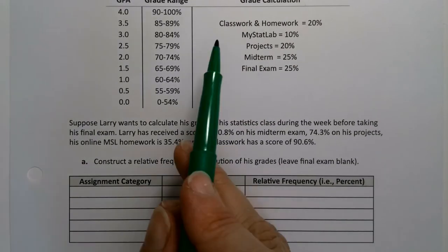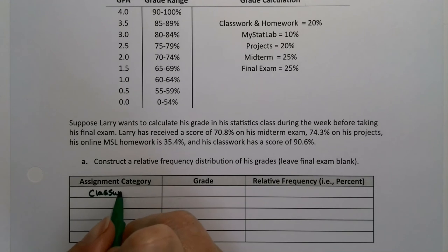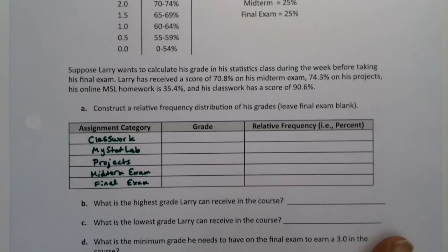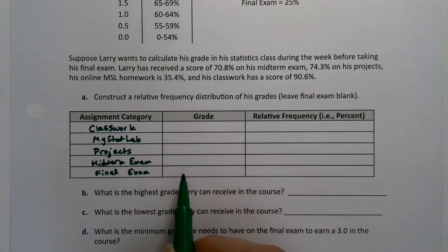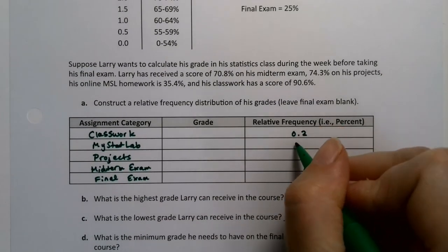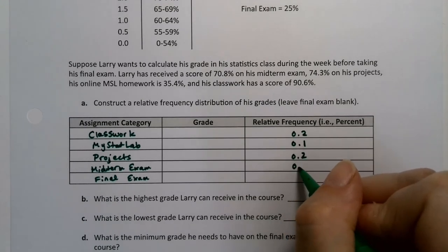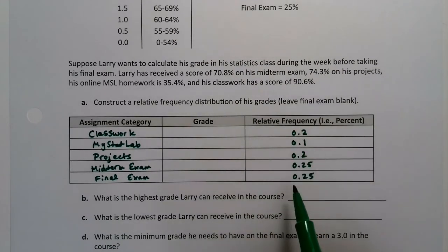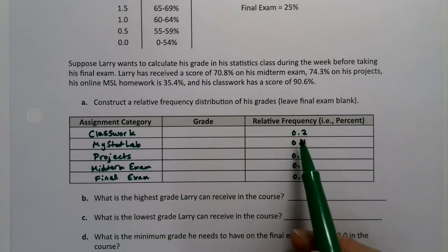We're going to construct a relative frequency distribution of his grades, leaving the final exam blank because, of course, he has not taken it yet. Let's go back up here to the categories. We have classwork, MyStatLab, projects, midterm, exam, and final exam. This category section is not necessary, but for your own self, I would write this down because you will be able to find your grades in your class based on this example. I didn't do the percentages. I did the relative frequency as a decimal. So this is 0.2, 0.1, 0.2, 0.25, and 0.25.